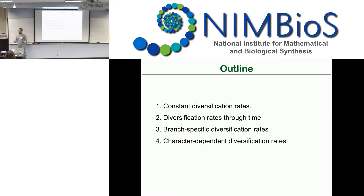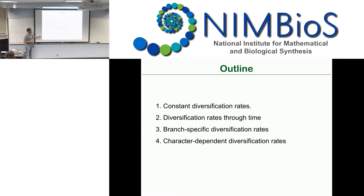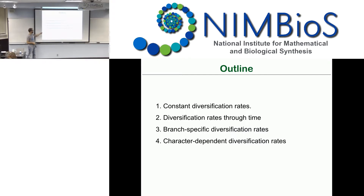The overall goal is to have a framework where we can analyze diversification rates that have changed through time — for example, correlated by environmental factors — and where diversification rates could have changed along the lineages of our phylogeny, with some changes being character-dependent. We currently do all these things stepwise in RevBayes, but we are working toward a unifying framework testing whether diversification is more driven by abiotic or biotic factors.